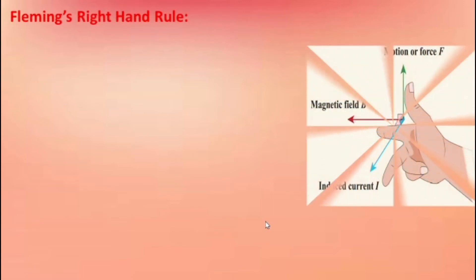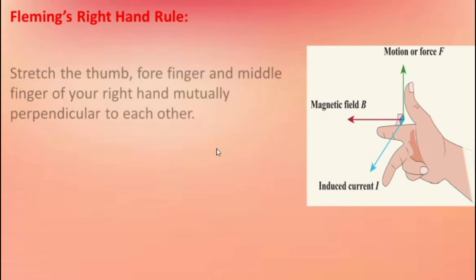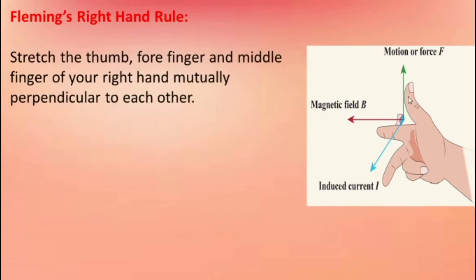Now we move to the important topic: Fleming's right hand rule. The thumb indicates the motion or force of the conductor, the forefinger indicates the magnetic field B, and the middle finger indicates the induced current. Stretch the thumb, forefinger, and middle finger of your right hand mutually perpendicular to each other — there is a 90-degree angle between the fingers.